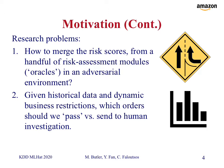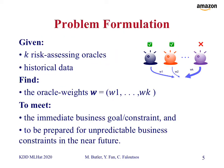The first problem is, because we're considering an ensemble model — a subsystem of a greater fraud detection system — how do we merge the risk scores from a handful of risk assessment modules or oracles in this adversarial environment? Second, given historical data and dynamic business restrictions, which orders should we pass versus which should be sent for human investigation? Given K risk-assessing oracles and historical data, we want to find the oracle weights to meet current business goals and constraints, and be prepared for unpredictable future business constraints.